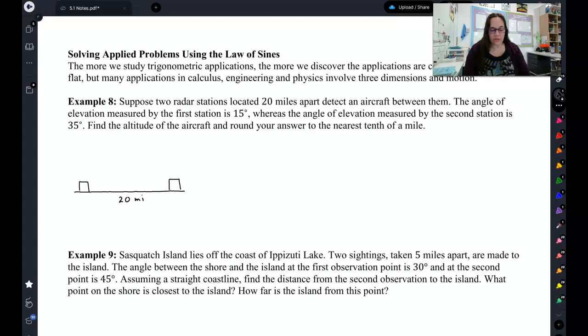Now the angle of elevation measured by the first station is 15 degrees. So that's pretty flat. There's our 15 degrees. Whereas the angle of elevation measured by the second station is 35 degrees. So about like that. So here's our airplane. Let's see if Mrs. Johnson can draw an airplane. Right there between them.